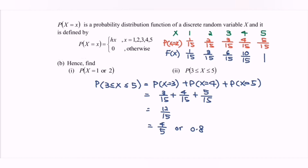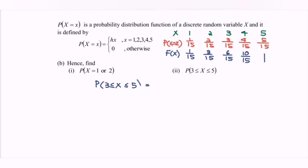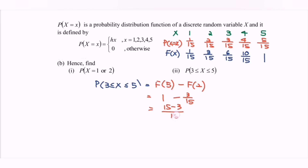This can also be solved using the cumulative distribution table. P(3 ≤ x ≤ 5) = F(5) − F(2), since we include x=3 to 5 but exclude x=1 and 2. Referring to the blue color distribution: F(5) = 1 minus F(2) = 3/15, giving (15 − 3)/15 = 12/15, simplified as 4/5 or 0.8.